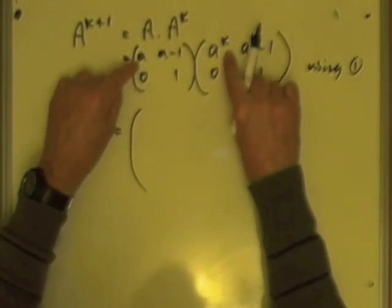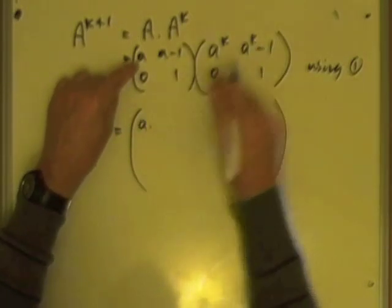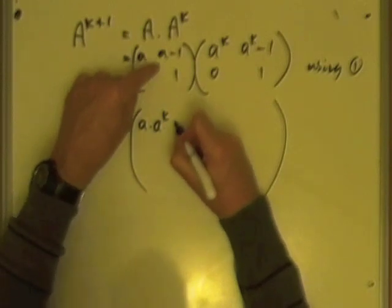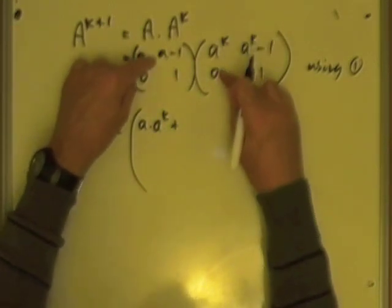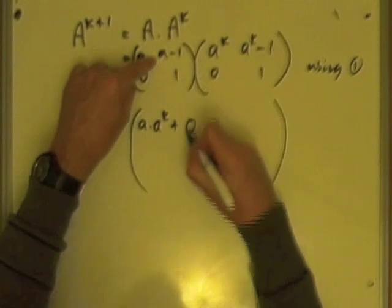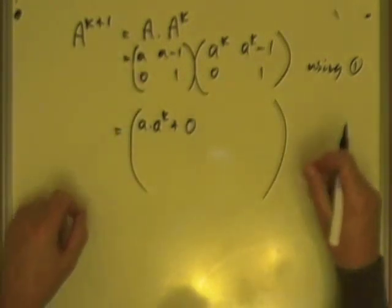So, the first row would be an A, we'll spell it all out, an A times an A to the K, plus, moving along, an A minus 1 times 0. That was times 0, that was handy.